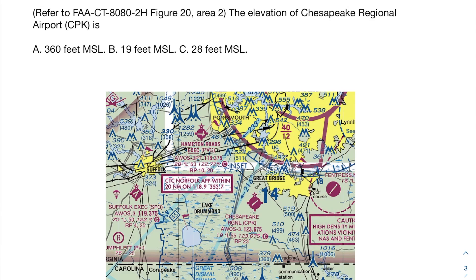Now we have the second practice problem. If you want, pause the video and try to figure it out yourself, then continue and I'll dive into how to solve it. We're looking at another figure and being asked what the elevation of Chesapeake Regional Airport, abbreviated CPK, is. We'll ignore the three answer choices and take a look at the figure.